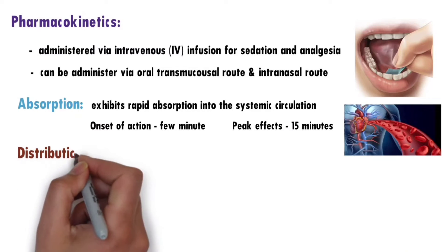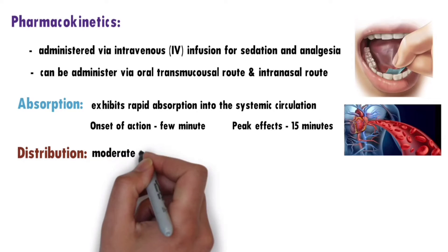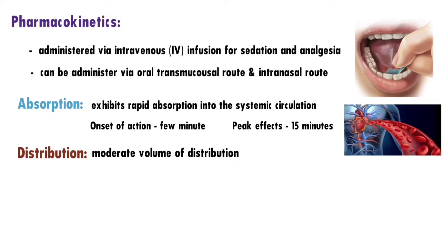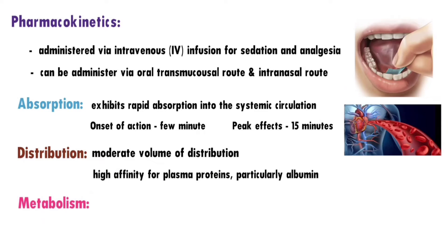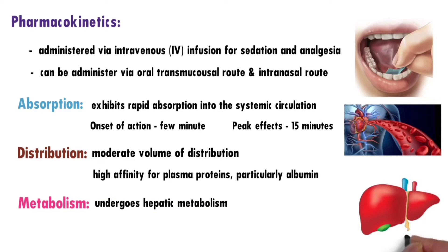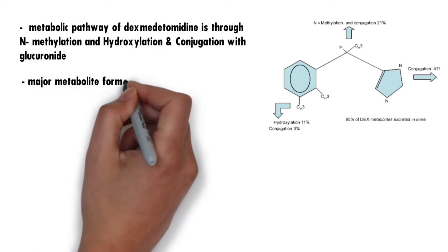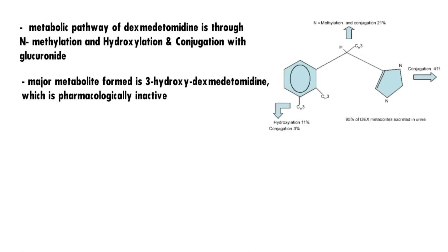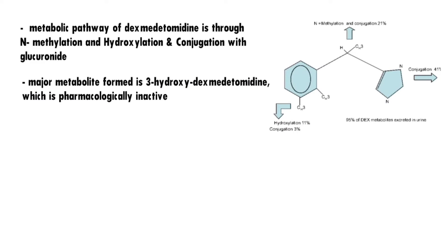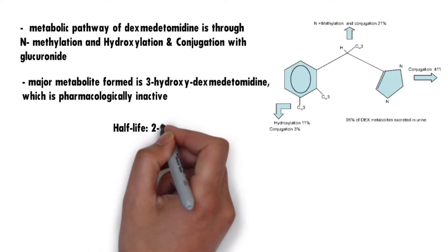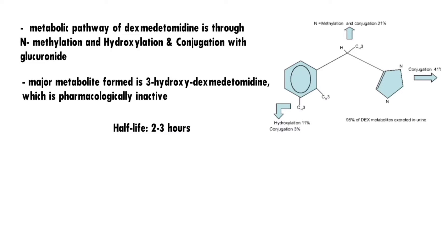Distribution: Dexmedetomidine has a moderate volume of distribution, indicating that it distributes widely throughout the body. It has a high affinity for plasma proteins, particularly albumin. Metabolism: Dexmedetomidine undergoes hepatic metabolism primarily via cytochrome P450 enzymes, predominantly CYP2A6 and CYP2E1. The major metabolite formed is 3-hydroxy dexmedetomidine, which is pharmacologically inactive. The metabolism is relatively slow, resulting in a longer elimination half-life of 2–3 hours.